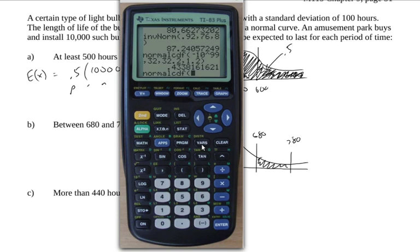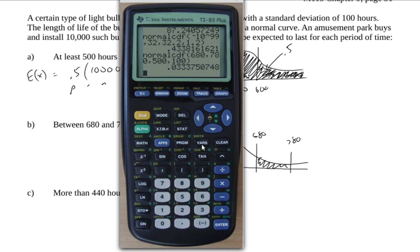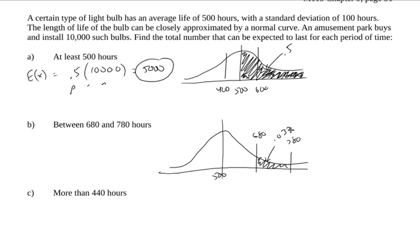My lower bound is 680. My upper bound is 780. My mean is 500. My standard deviation is 100. We get 0.0334. This was normal CDF. 680, 780, 500, 100. So 680 and 780, those are the lower and the upper bounds. 500 is the mean. 100 is the standard deviation. I just got those from up there.